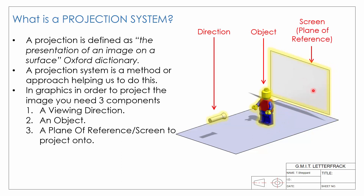The graphical term for our screen is a plane of reference or reference plane. There are different types of projection systems, and we'll look at two in particular: perspective projection and orthographic projection. Both involve the same three basic components.